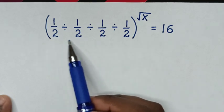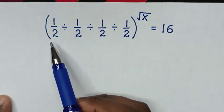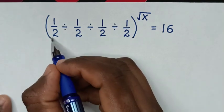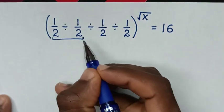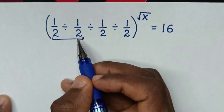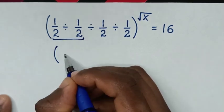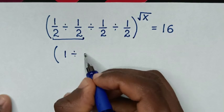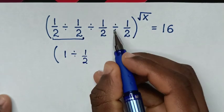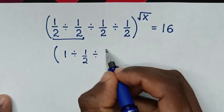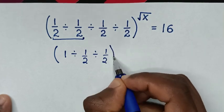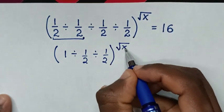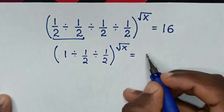So first we will start to solve from inside the bracket, beginning with the first operation: one half divided by one half. This divided by this is 1. So it will be bracket 1, then divided by a half, then divided by a half, bracket, to the power of square root of x, is equal to 16.